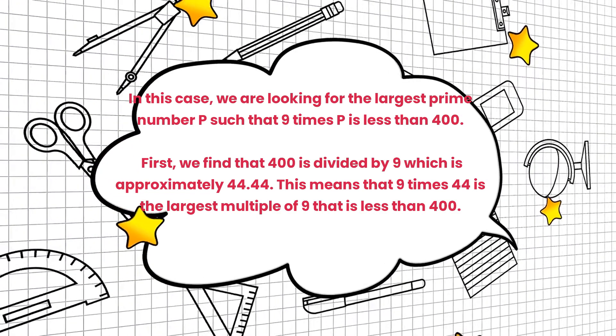First, we find that 400 is divided by 9, which is approximately 44.44. This means that 9 times 44 is the largest multiple of 9 that is less than 400.